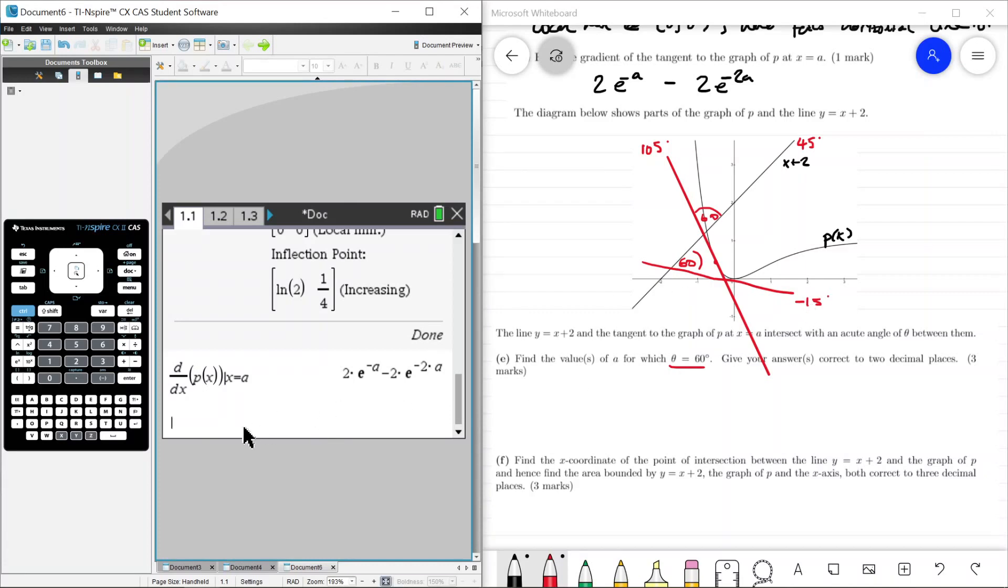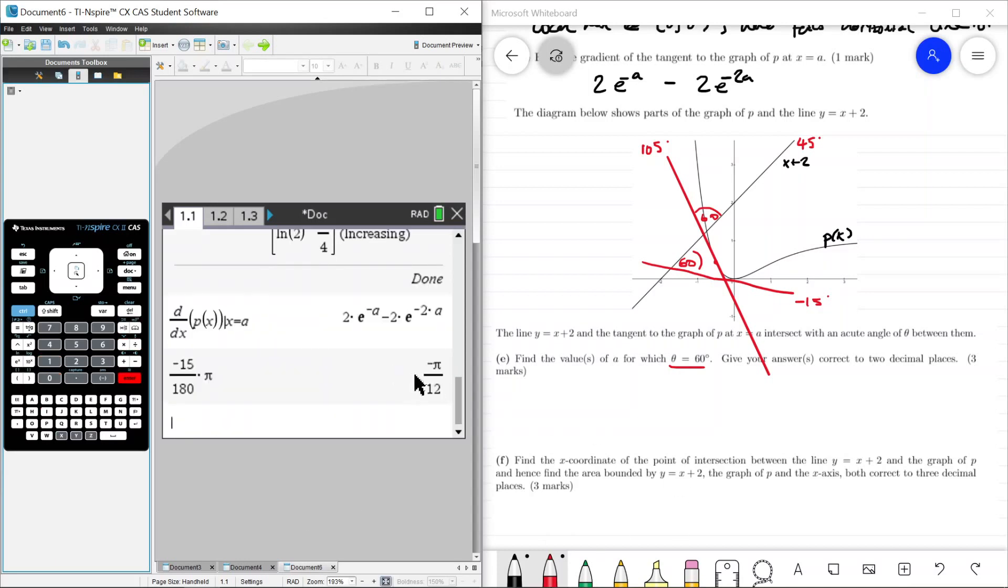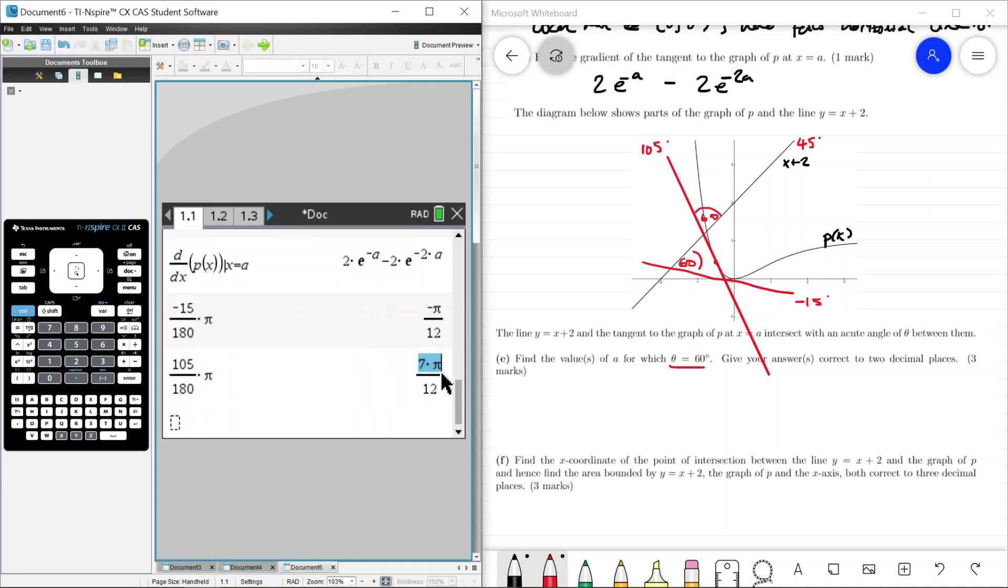We want to find the points on our P of X such that the tangents have these specific angles. Now the problem is, we have angles over here, and angles and differential calculus don't really mix too well. So instead of considering the angles of these lines, it's better to consider the gradients of these lines. For this minus 15 degree angle, let's convert that to radians first. Minus 15, to convert to radians, we divide by 180 and we multiply by pi. So this is the angle in radians. And for the second guy, 105, we divide by 180 times by pi. So this is the angle in radians of the second line. Now we want to convert these to gradients. How to convert angles to gradients? Just take the tangents. So the tangent of the first angle is root 3 minus 2, and the tangent of the second angle is going to be minus root 3 minus 2.